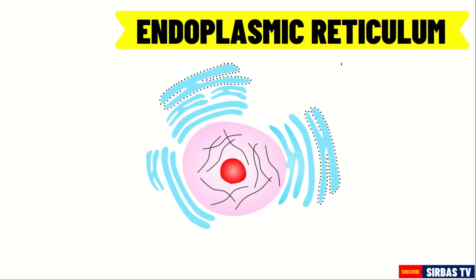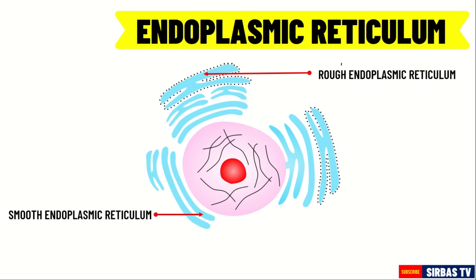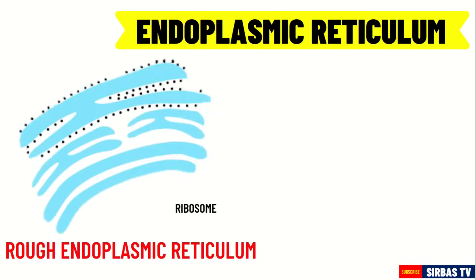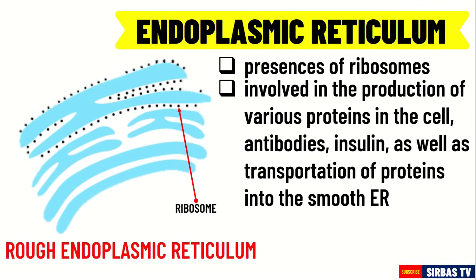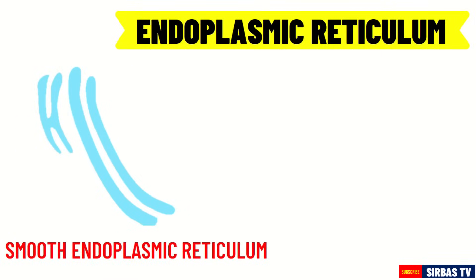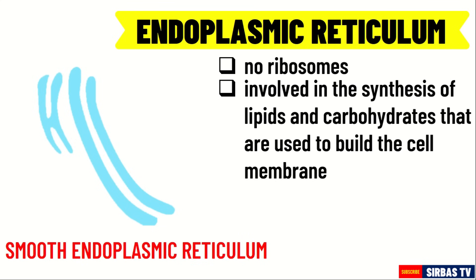Endoplasmic reticulum. There are two types of endoplasmic reticulum: the smooth endoplasmic reticulum and the rough endoplasmic reticulum. The rough endoplasmic reticulum is called rough because it appears rough due to the presence of ribosomes. It is involved in the production of various proteins in the cell, antibodies, insulin, as well as transportation of proteins into the smooth endoplasmic reticulum. On the other hand, the smooth endoplasmic reticulum appears smooth because its surface does not contain ribosomes. It is involved in the synthesis of lipids and carbohydrates that are used to build the cell membrane.